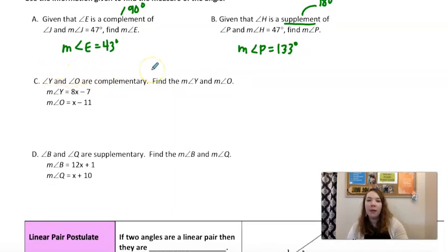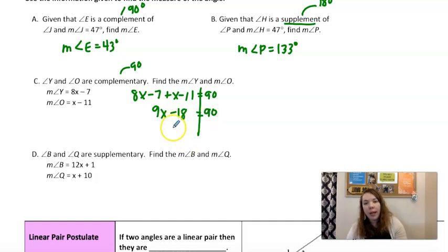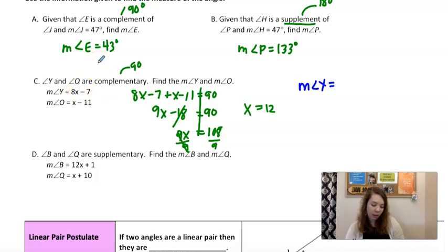Y and O are complementary, find their measures. So we know that they should add to be 90. So if I add them together, equals 90, and now I can solve this. So we get 9X minus 18. Add 18 to both sides. Divided by 9. X is 12. They asked us to find the measures, so you have to plug it back in. So 8 times 12 minus 7 gives us 89. O, 12 minus 11 is 1. And these do add to 90.